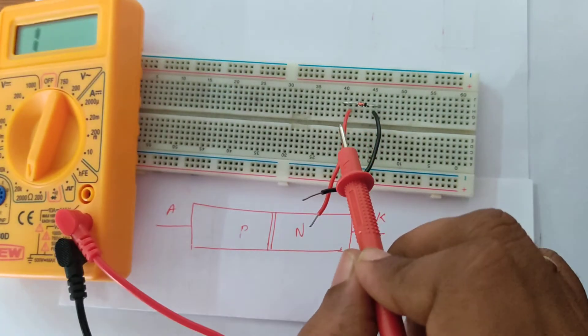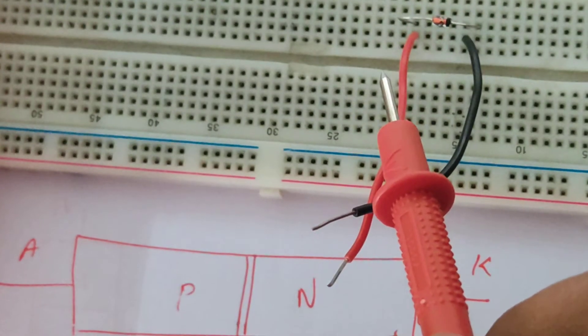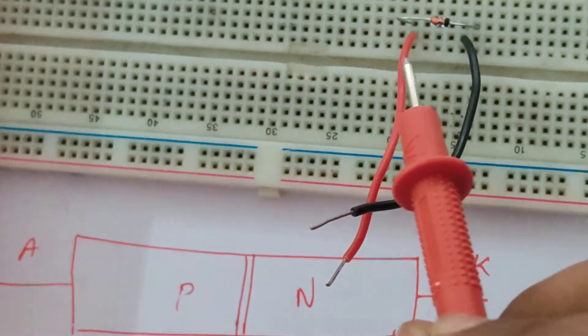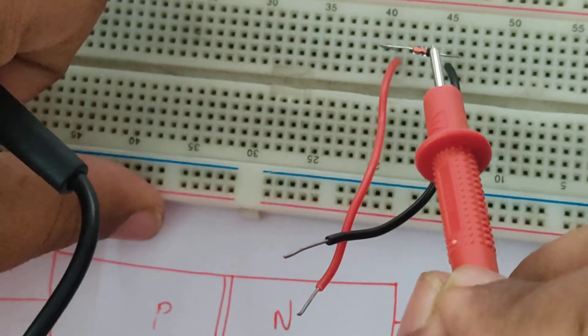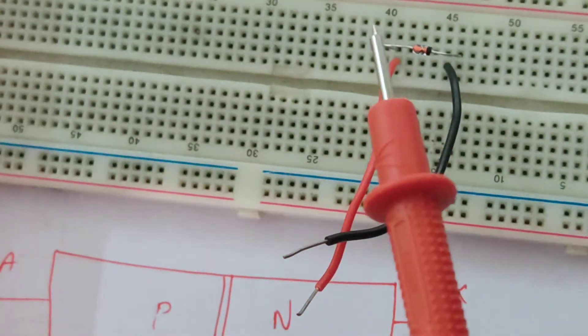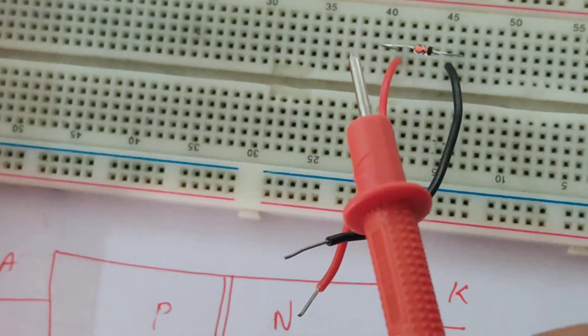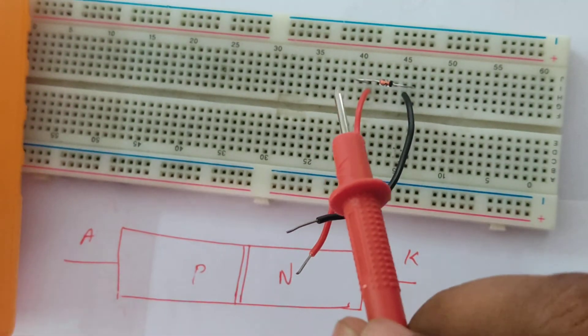You can see the black strip over here. If I want to zoom it down, you can see a black strip over here. This is the cathode. The other end is the anode. Now let us see how this particular device is checked.